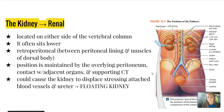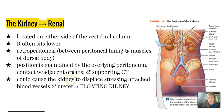The kidneys' position is maintained by the overlying peritoneum, which is in contact with adjacent organs, and also supporting connective tissues. Sometimes those organs and supporting tissues can cause the kidney to displace itself, stressing attached blood vessels and the ureter. This disorder is called a floating kidney.